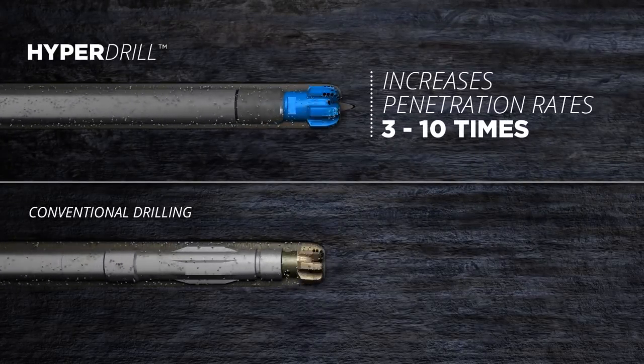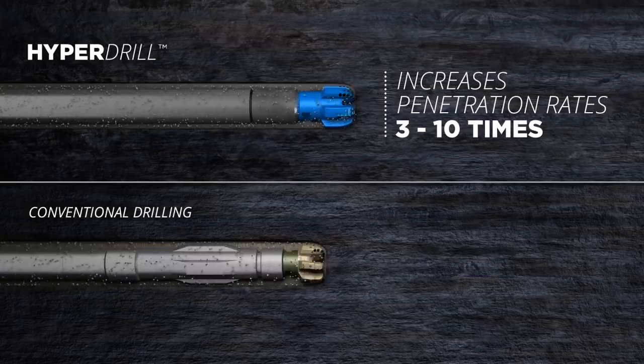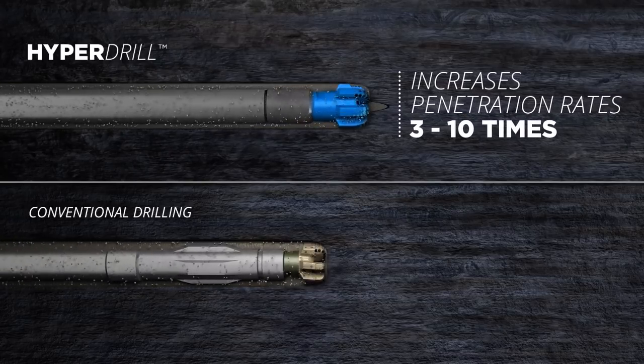HyperDrill does much of the drilling work ahead of the rotary bit. This increases penetration rates by 3 to 10 times and lowers the requirements for both bit weight and torque.